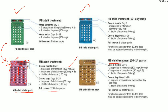For the pediatric Multibacillary group, we give Rifampicin 450 mg, Dapsone 50 mg, and 150 mg of Clofazimine on Day 1. From Day 2, as usual, Dapsone is given every day and Clofazimine 50 mg on alternate days — every other day. The full course for Multibacillary will be 12 blister packs.